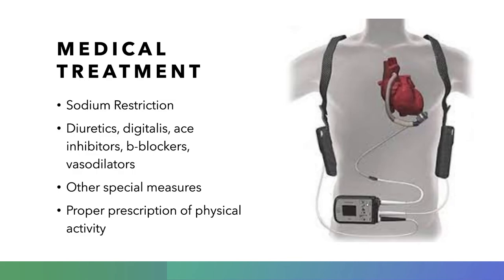Common medical treatments include sodium restriction, which helps with hypertension and fluid retention. Diuretics do as well. Digitalis can slow heart rate. ACE inhibitors, beta blockers, and vasodilators all work on lowering blood pressure and slowing heart rate. It's counterintuitive because these address the symptoms your body creates trying to increase cardiac output — your body's compensatory cure makes it worse over time. So you have to force the body to do the opposite: slow down heart rate, blood pressure, and contractility so the heart can recover.